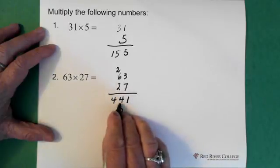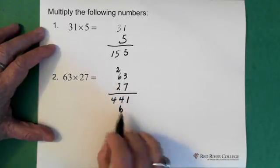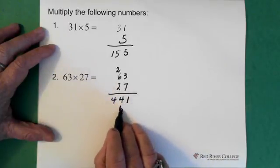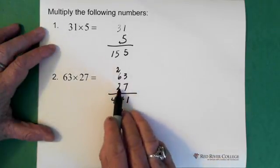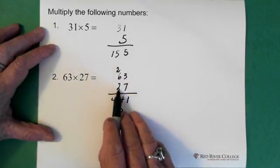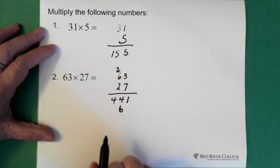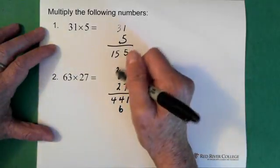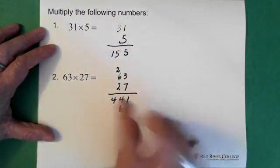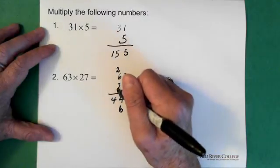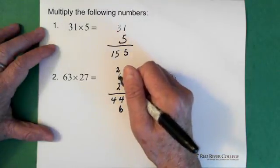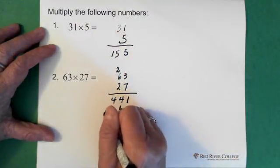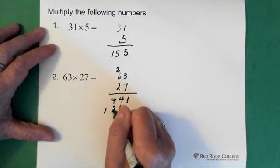Now the 6 goes below this digit. So we step over to the left 1 and the 6 goes down here. Then we take the 2 and multiply it by the 6, and that gives us 12. We don't worry about this 2 here because the 2 was for this top piece.